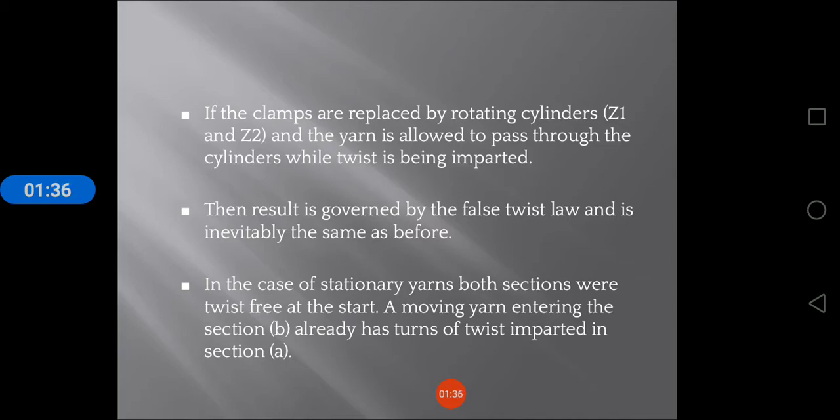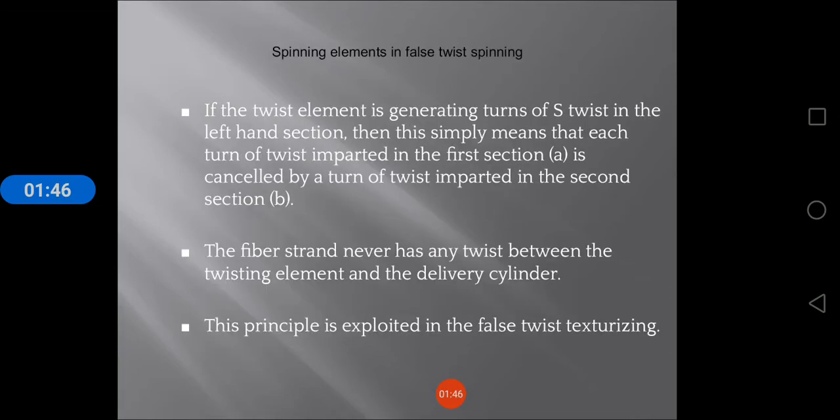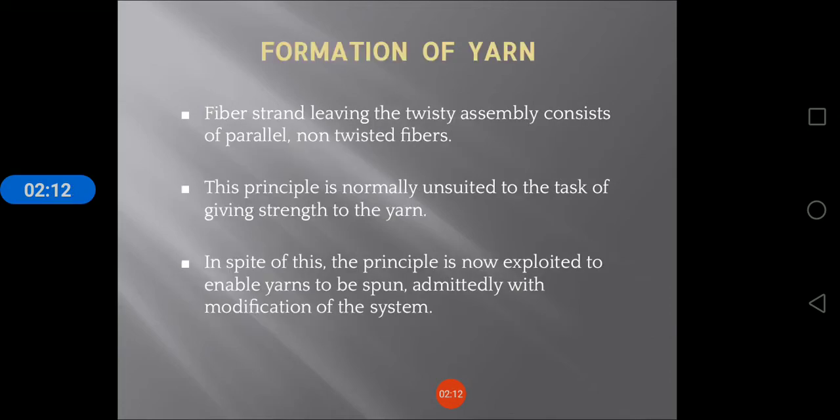In the case of stationary yarns, both sections were twist-free at start. A moving yarn entering the section already has turns of twist imparted. If the twist element is generating turns of Z-twist in the left-hand section, this simply means that each turn of twist imparted in the first section is cancelled by a turn imparted in the second section. The fiber strand never has any twist between the twisting element and the delivery cylinder. This principle is exploited in false twist texturing.